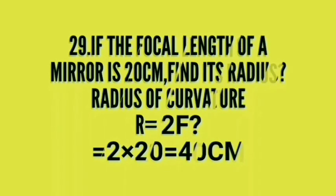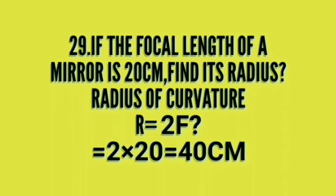If the focal length of a given mirror is 20 centimeters, find its radius of curvature. r equal to 2f. Substitute f equal to 20 in the formula, it will become 2 into 20 that equal to 40 centimeters is the answer.